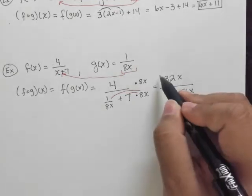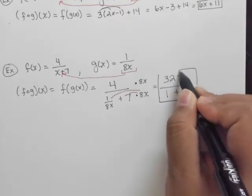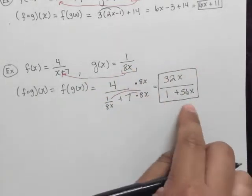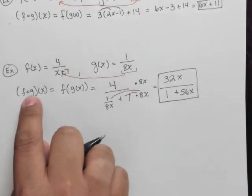So this right here is the simplification. We've cleaned it up a bit. We've cleaned up this right here, and this is what we get. So this is f composed of g of x.